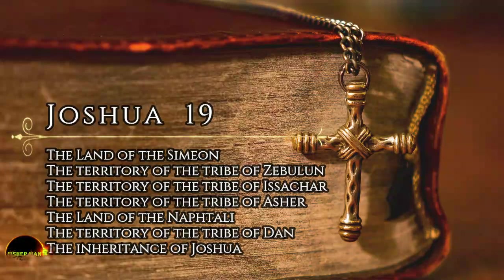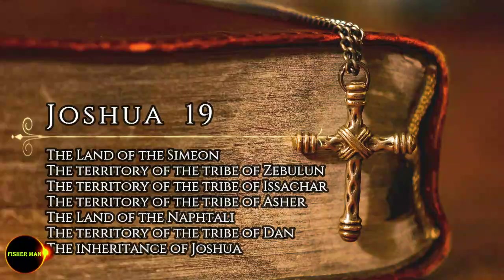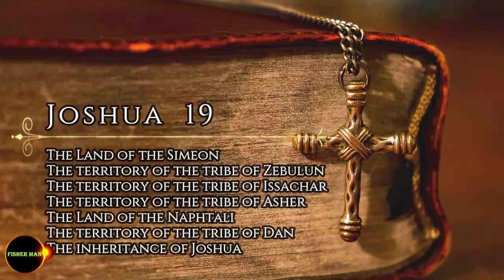Chapter 19. The second lot came out for the tribe of Simeon, clan by clan. Their inheritance lay within the territory of Judah.